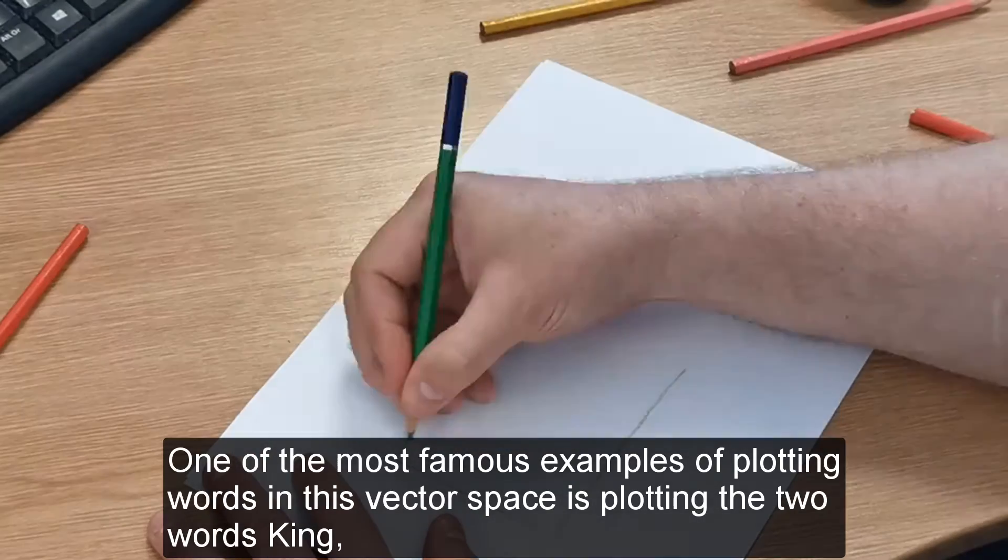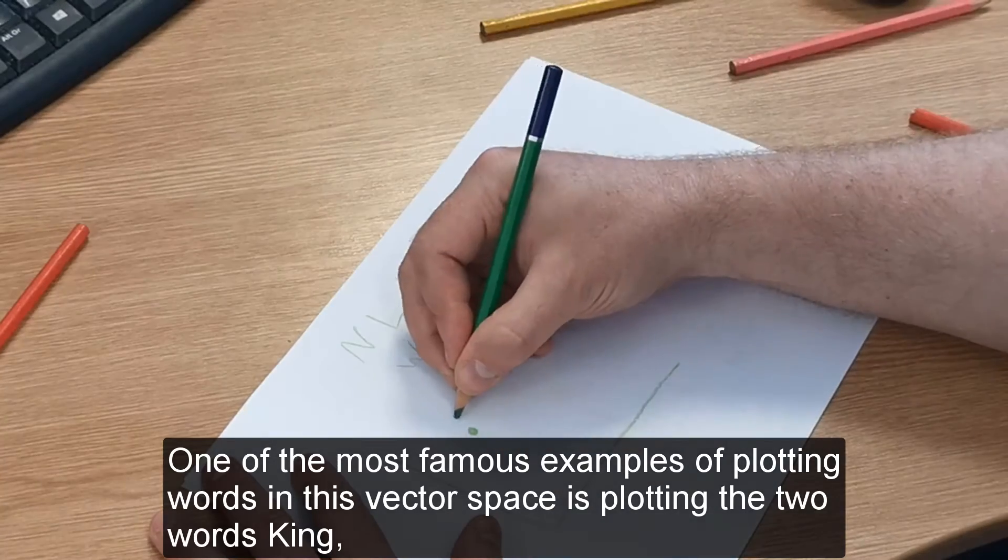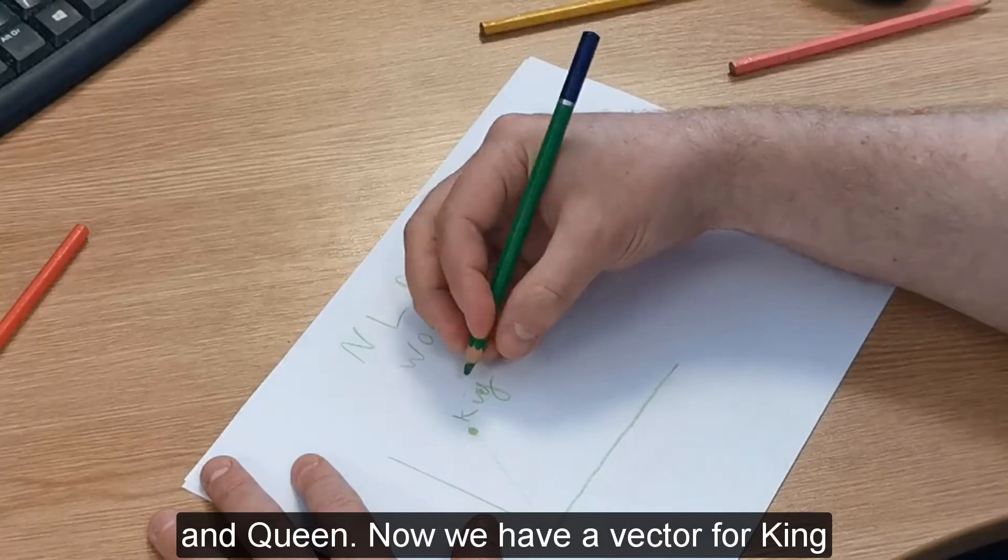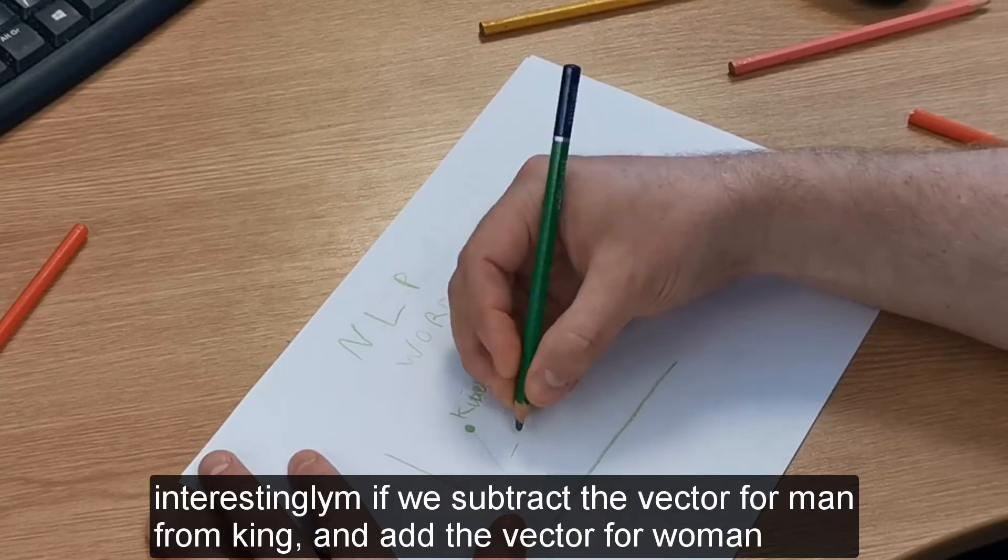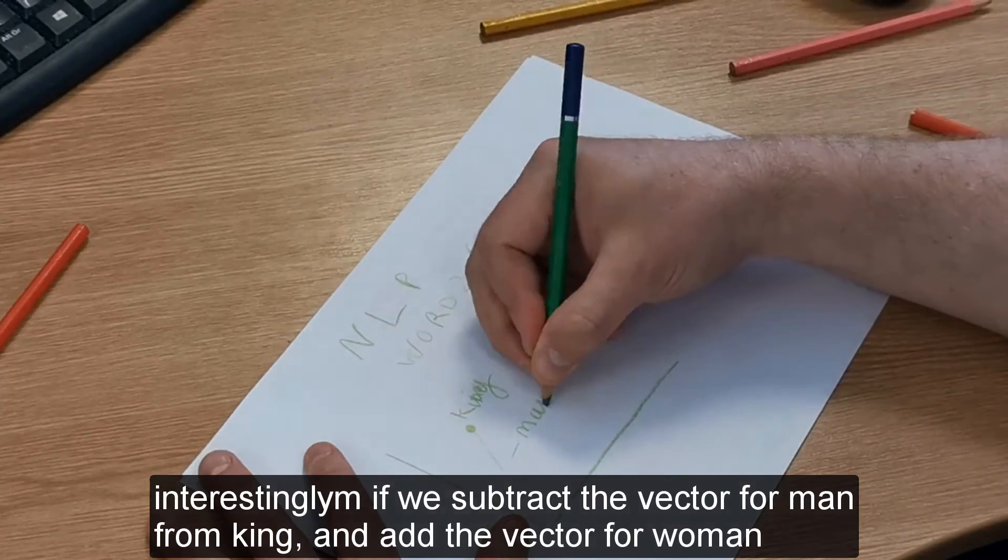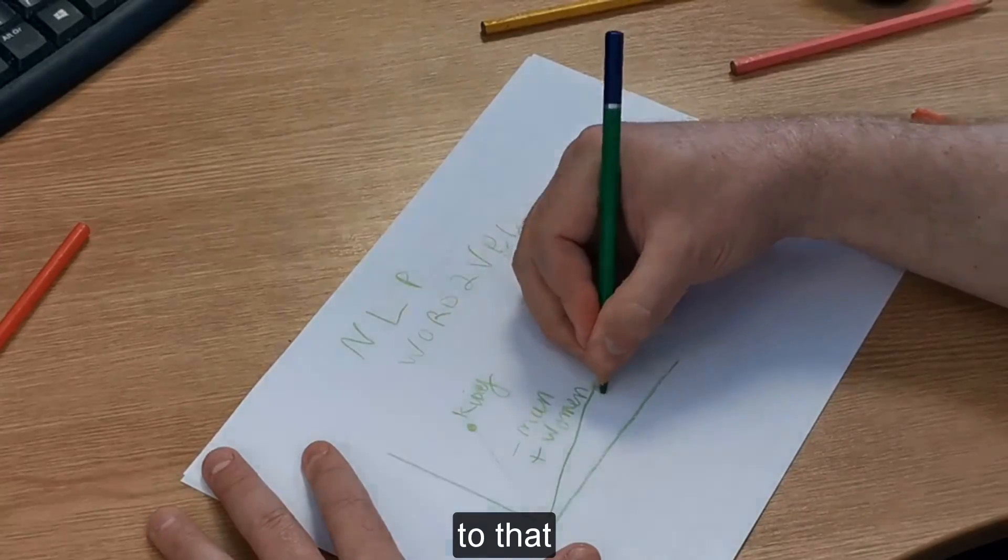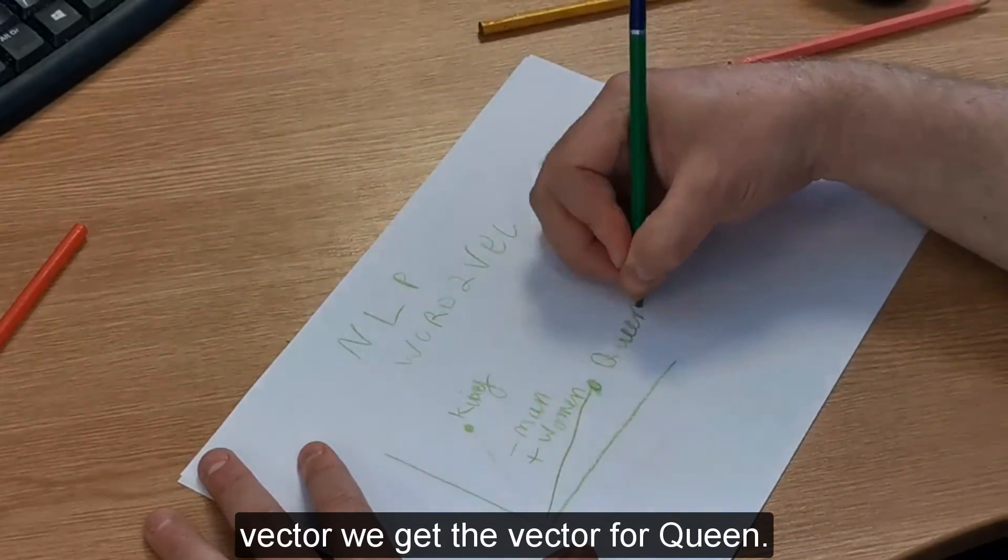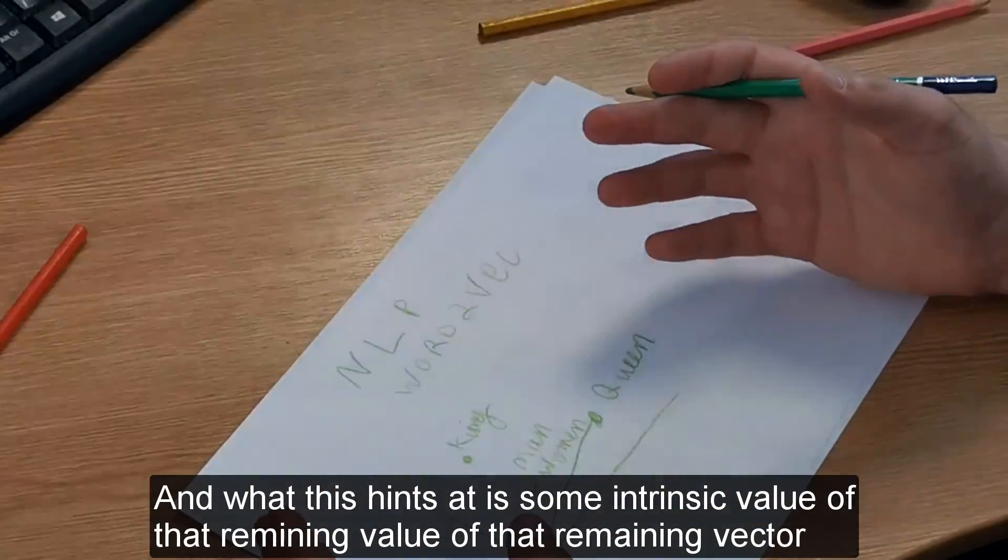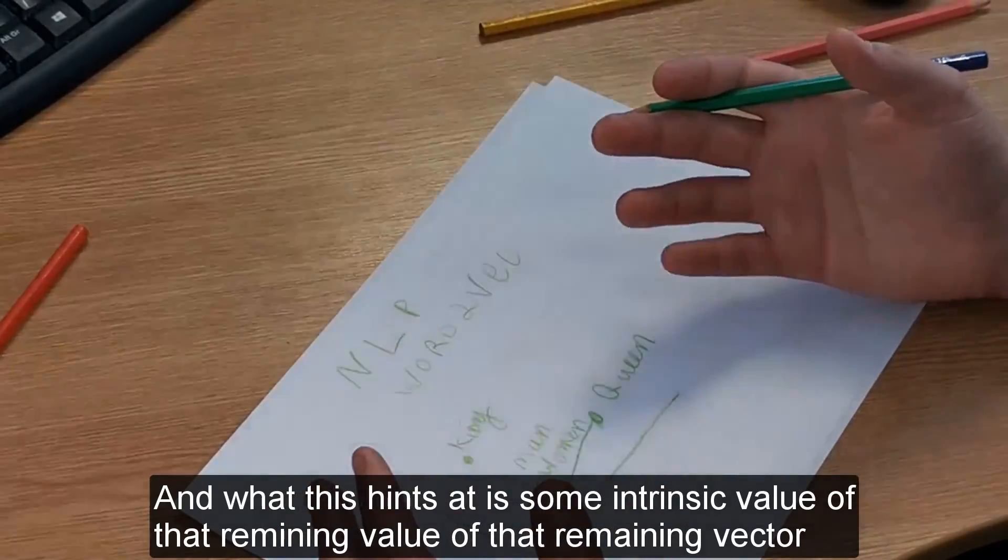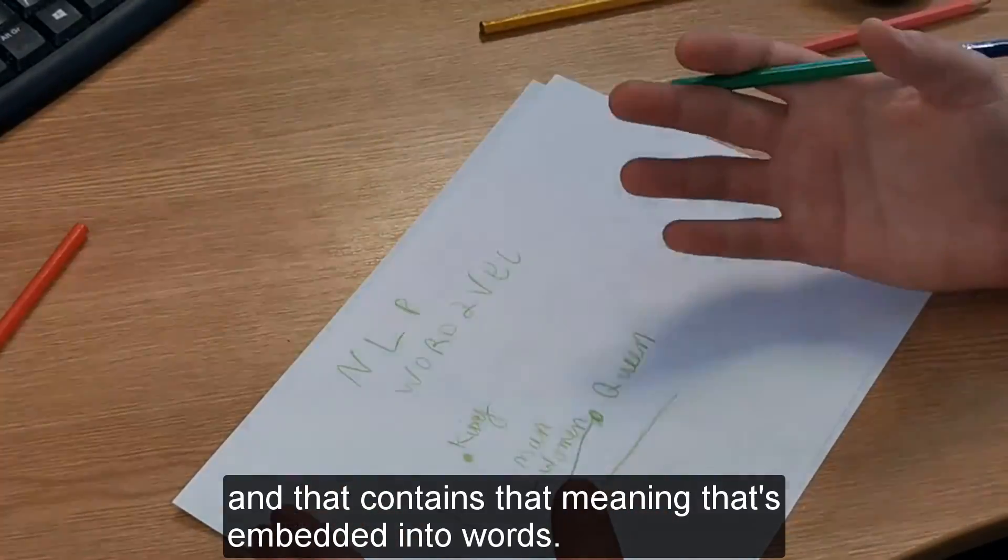methods of doing this is using a library called Word2Vec. One of the most famous examples of plotting words in this vector space is plotting the two words king and queen. We have a vector for king that we can plot on our graph. But interestingly, if we subtract the vector for man from king, and add the vector for woman to that vector, we get the vector for queen. What this hints at is some intrinsic value of that remaining vector that is linked to royalty and contains that meaning that is embedded into words.